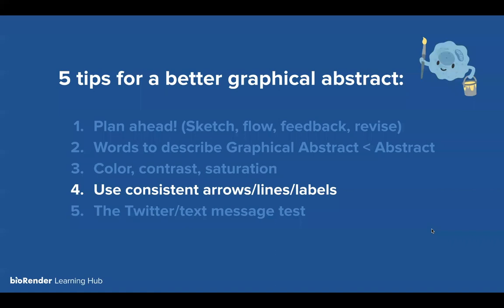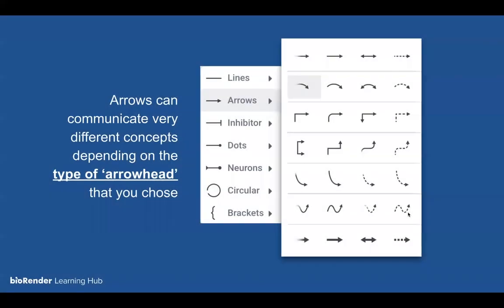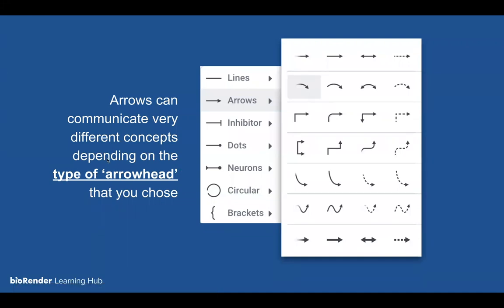Tip four: consistent use of arrows, lines, and labels. Within BioRender there are many different arrow types, which is very intentional because different arrow types communicate different concepts depending on the arrowhead. A general pointed arrow shows directionality, movement, past or future states — I wouldn't use it for labeling objects because it communicates more about movement.